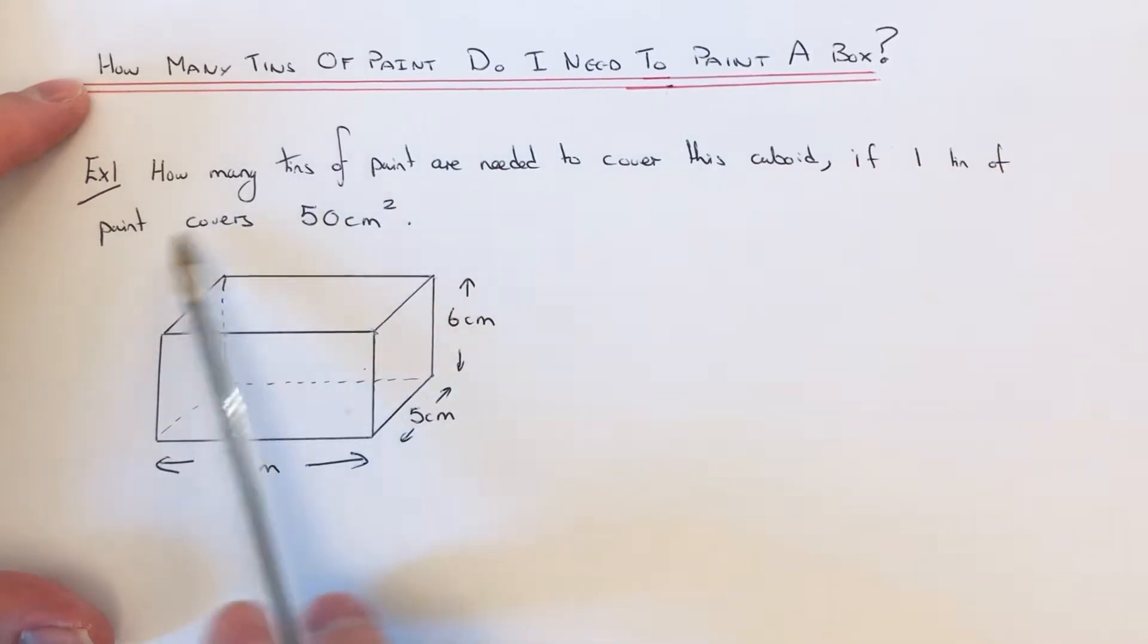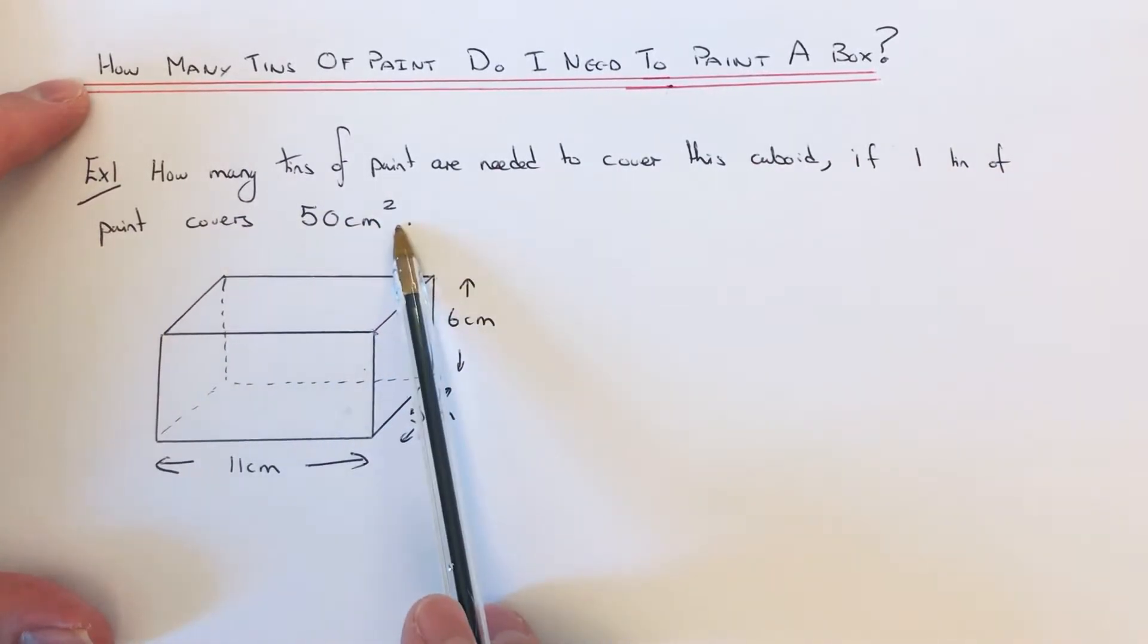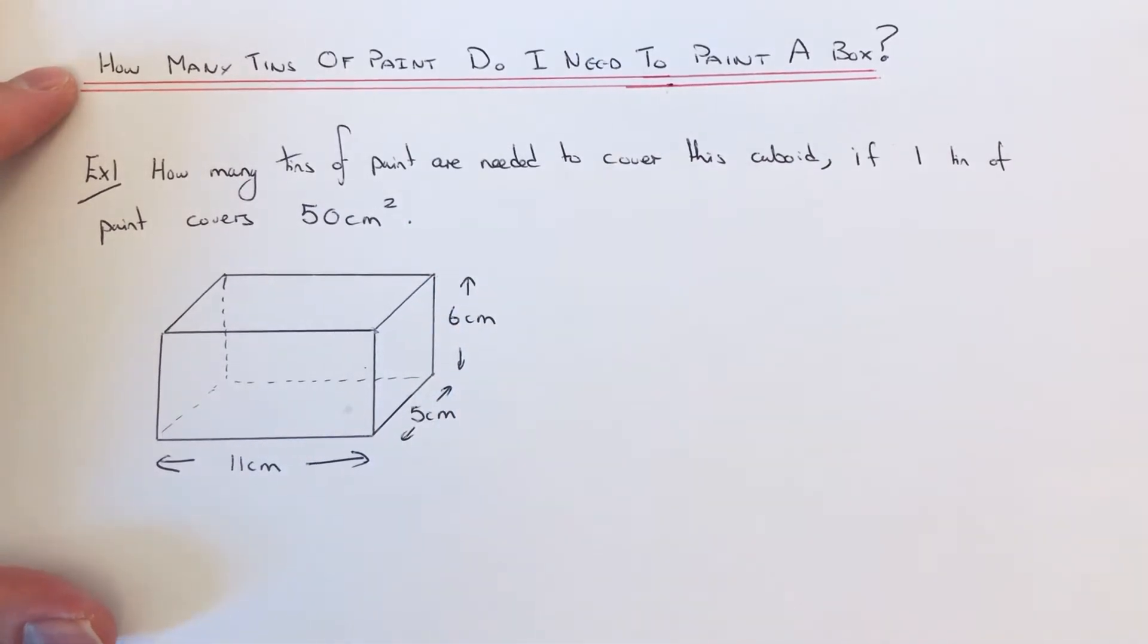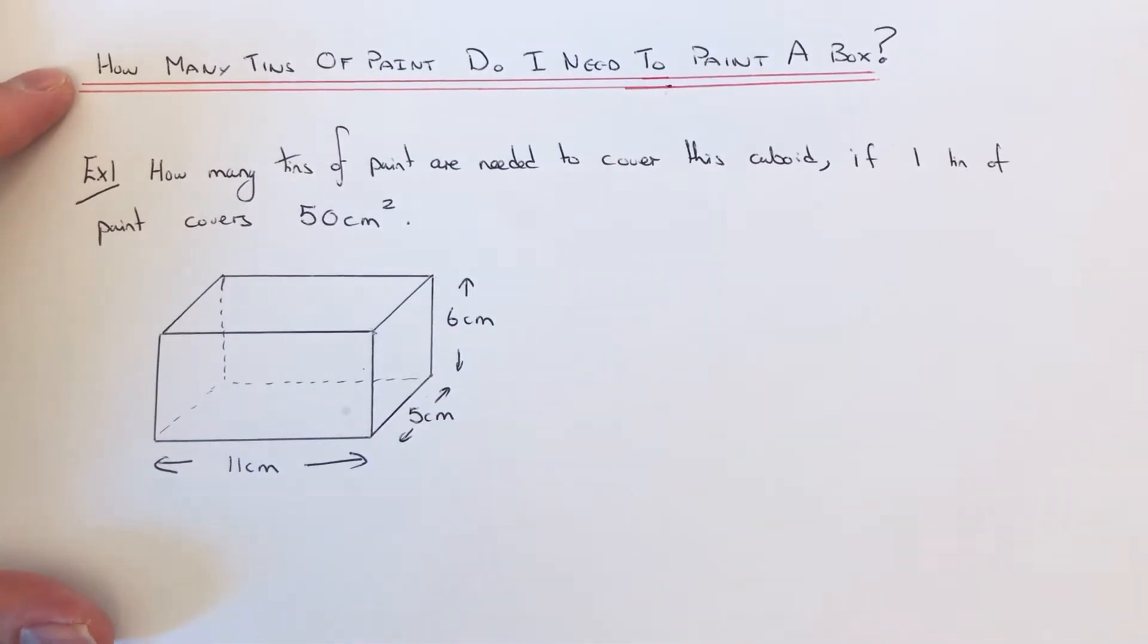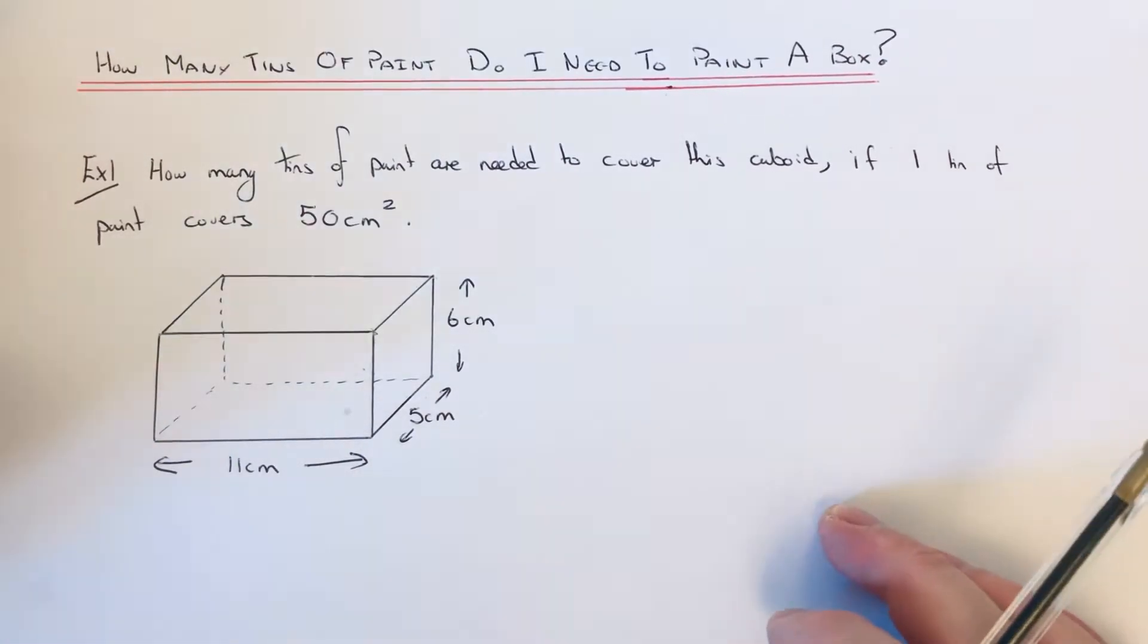If one tin of paint covers 50 centimeters squared, the first thing you need to calculate is the surface area of the cuboid. To find the surface area, you work out the area of all the surfaces or faces, which are the same thing, and add all these up. That's the first thing I'm going to do.